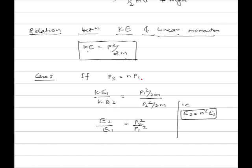If momentum of a body changes n times, that is p2 is equal to n times p1, then kinetic energy e1 upon e2 is equal to p1 squared upon 2m divided by p2 squared upon 2m, so e2 upon e1 is equal to (p2 upon p1) whole square. Therefore kinetic energy increases n squared times: e2 is equal to n squared into e1.